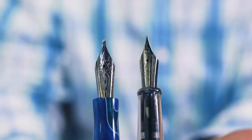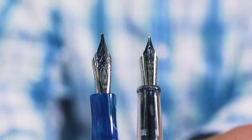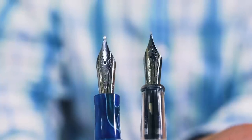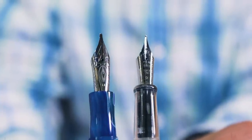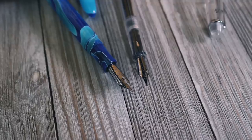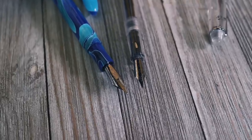The defining characteristic of a stub nib is its shape. Instead of having a round ball of tipping material to create a monoline, the rectangular shape of the stub nib provides a broader vertical downstroke and a thin horizontal one. The purpose is to add calligraphic flair to your handwriting.